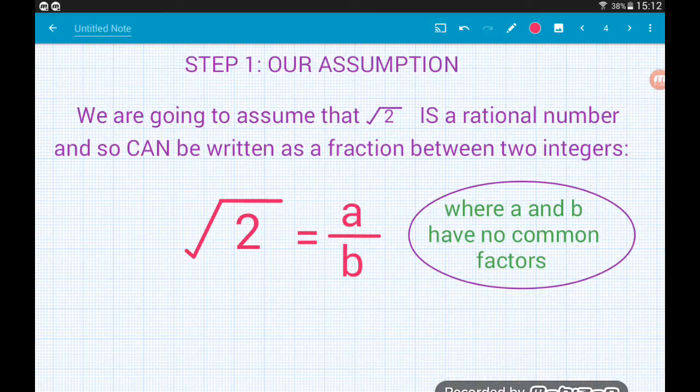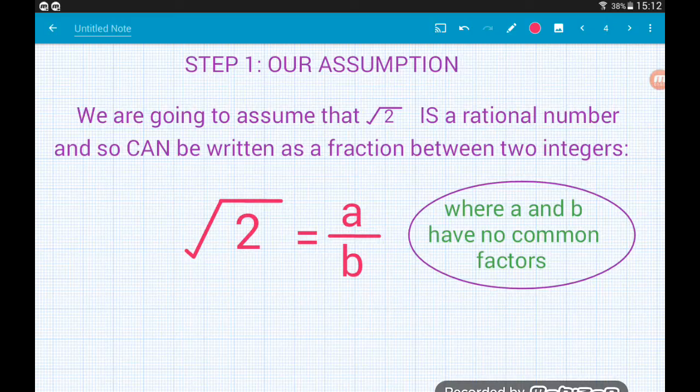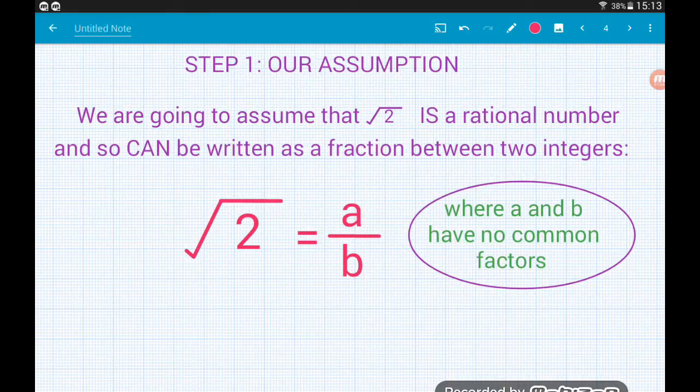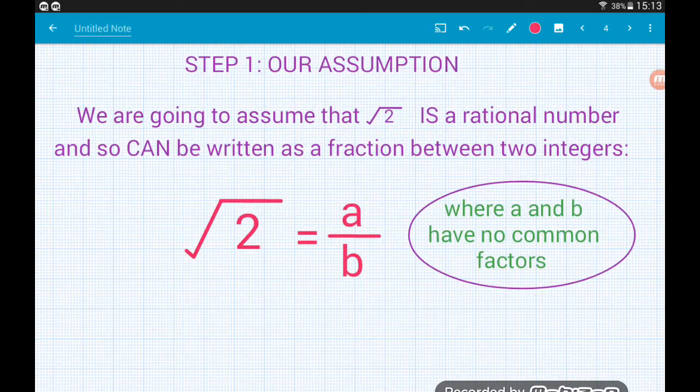And then that would mean that it can be written as a fraction between two integers. Now let's say here we choose a and b as our integers and a divided by b, a over b is the simplest form of that fraction. Now that's a very important part, is that this fraction is in its simplest form. There's no common factors between a and b.